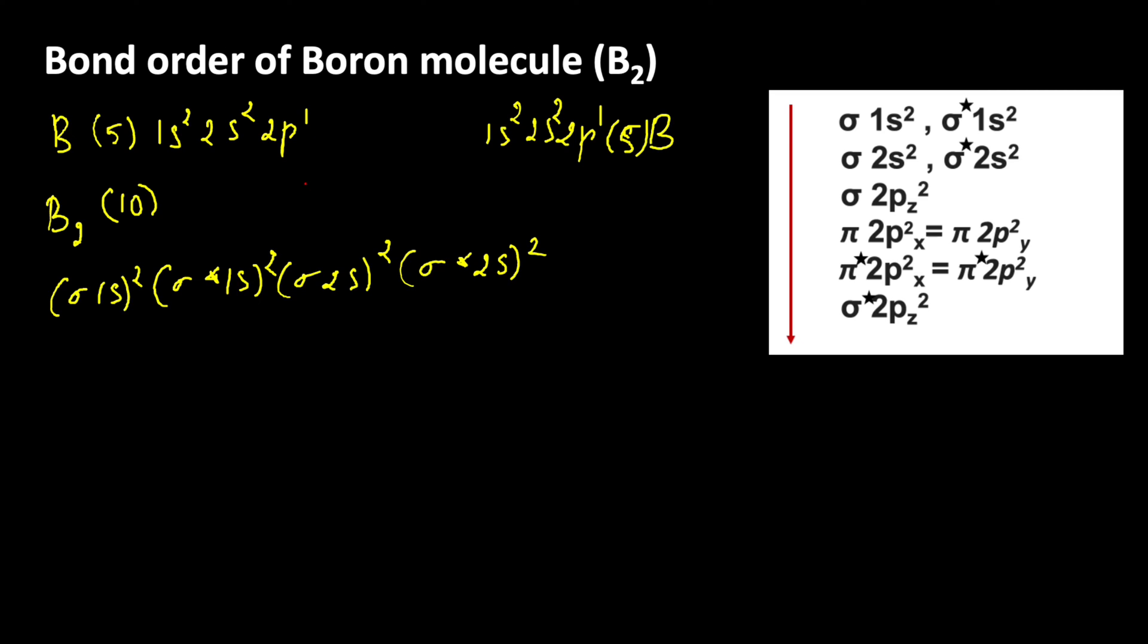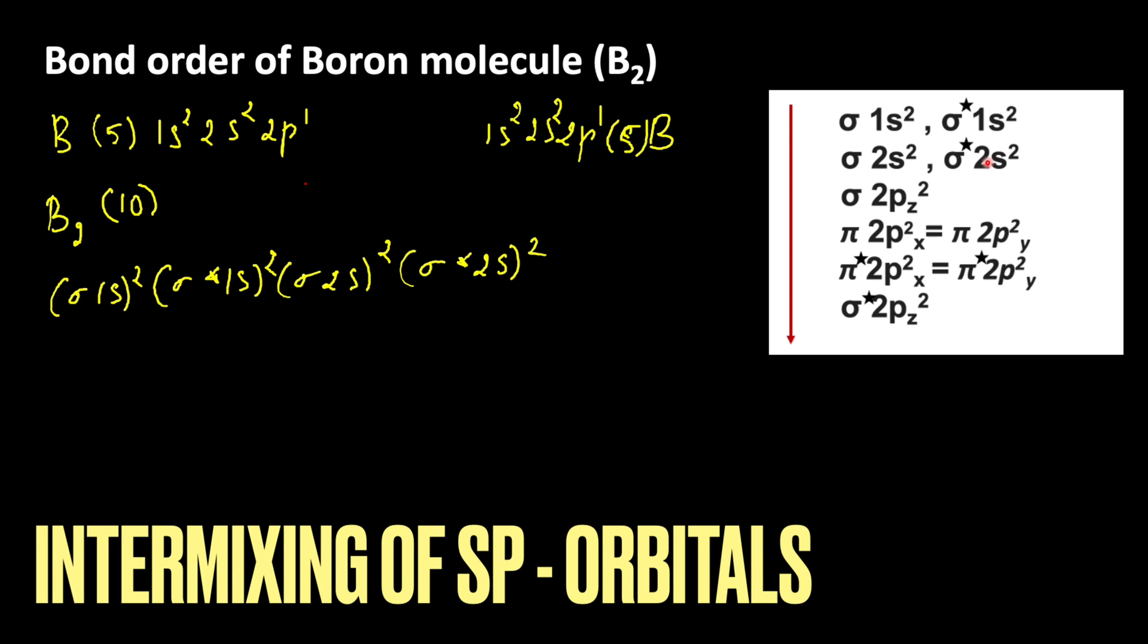Here you have to see one thing. In case of boron, carbon and nitrogen, there is the intermixing of 2s and 2p orbitals. Because the energy difference between 2s and 2p orbital is very low, this 2pz orbital gets more energy.